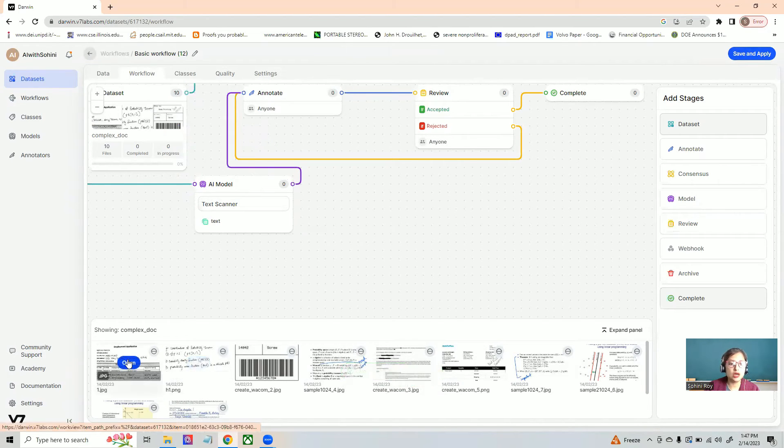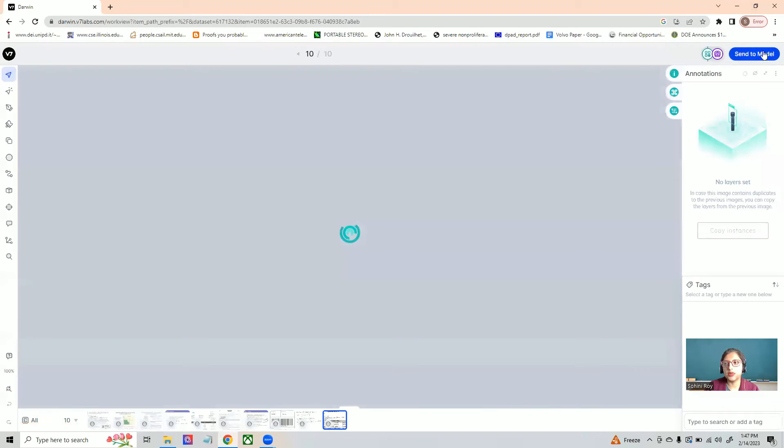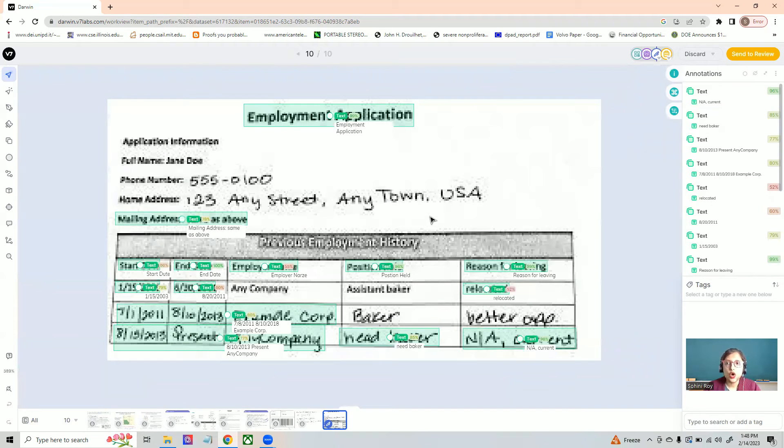And now in order to see how has the process worked, let me go and send a particular image to the model. So let's review the results of the text scanner on something like which looks like a receipt.